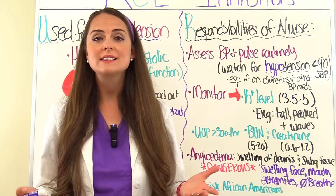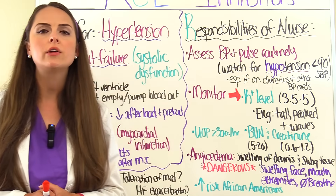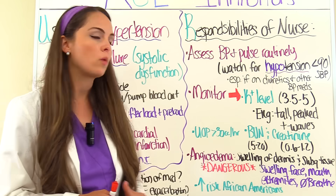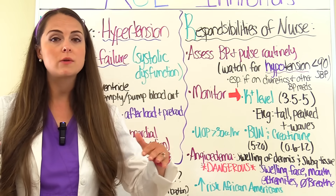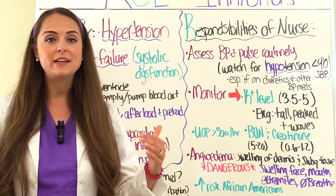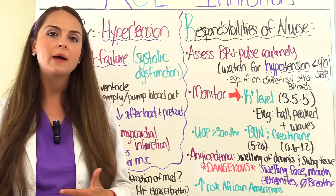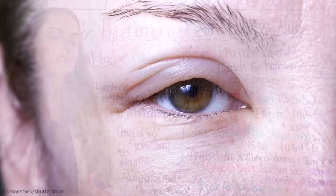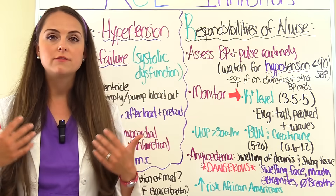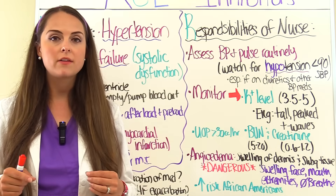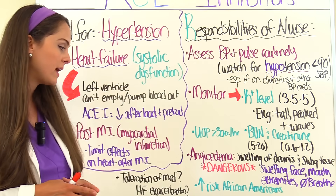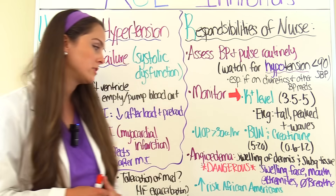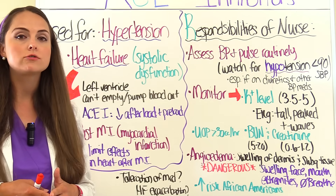Watch out for angioedema — swelling of the dermis and sub-Q tissue, which is deep, not superficial like urticaria, and can be life-threatening. Patients may present with swelling of the face, mouth, and extremities, and it can affect the airway, causing difficulty breathing. It's rare but can happen to any patient, and is most commonly found in African-American patients. If it occurs, it's dangerous and requires immediate medical treatment.